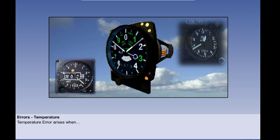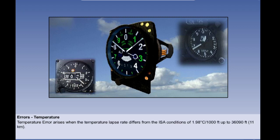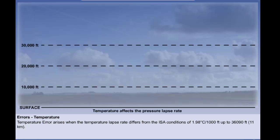The last error we will look at is temperature error. The pressure altimeter is calibrated to the International Standard Atmosphere or ISA, so even if there were no other errors at all, the altimeter will not indicate true altitude if the temperature lapse rate differs from ISA conditions. ISA conditions specify a temperature lapse rate of 1.98 degrees Celsius per thousand feet up to 36,090 feet or 11 kilometres. Unfortunately the actual temperature conditions rarely coincide with these standard conditions and there is therefore a temperature error to consider.